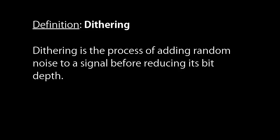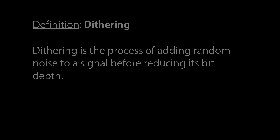Dithering is simply the process of adding white random noise to a signal before we quantize it to a lower bit depth. This is done to make the quantization noise more random, or white. So how does this work?